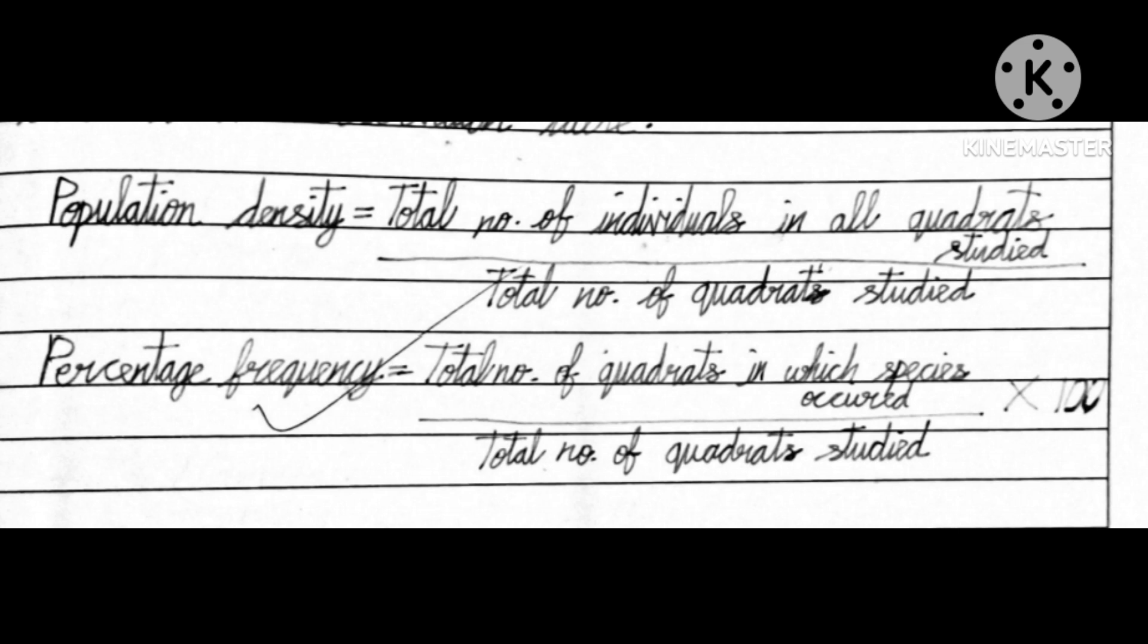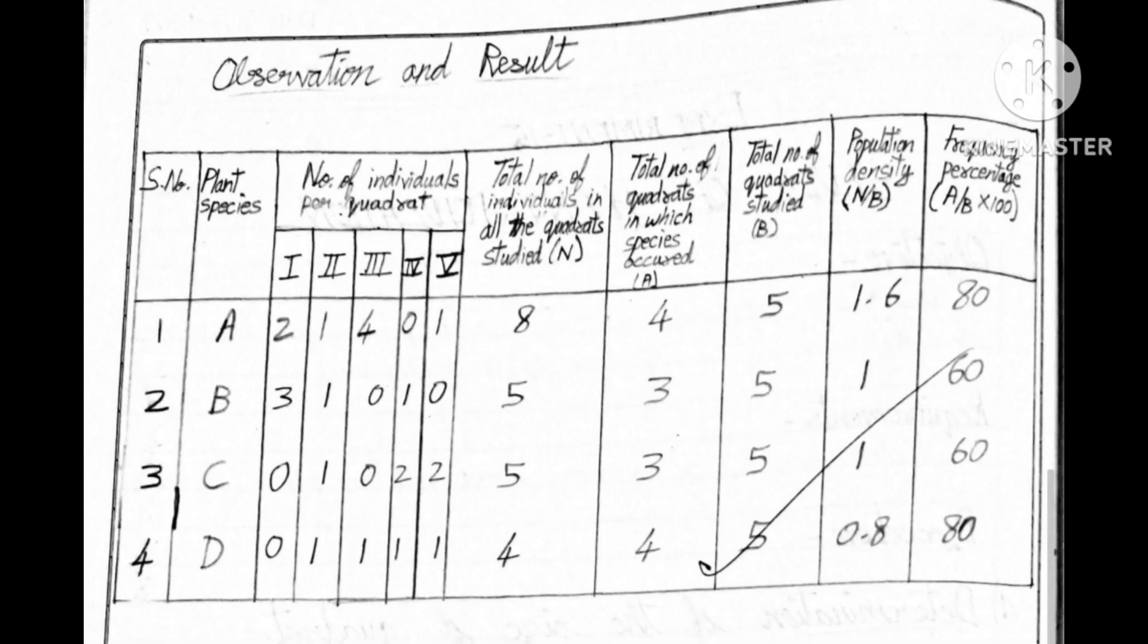In the observation table given, if you count and put the number of species then easily we can do the calculation. For this purpose let us go through the observation table. As you know we studied four species: species A, B, C and D. Let us discuss regarding species A.